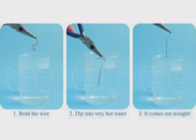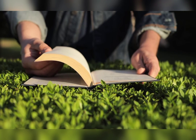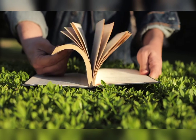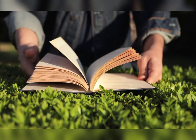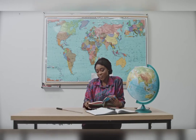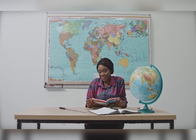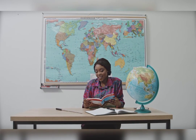Nitinol is a metal which can be folded in any way and then it can come back to its original position because of its special property. Nitinol ek aisa metal hota hai jis ko aap kisi bhi shape mein moro, wo apne original state mein waapas aa jaata hai kyunki uske paas aisi property hoti hai.